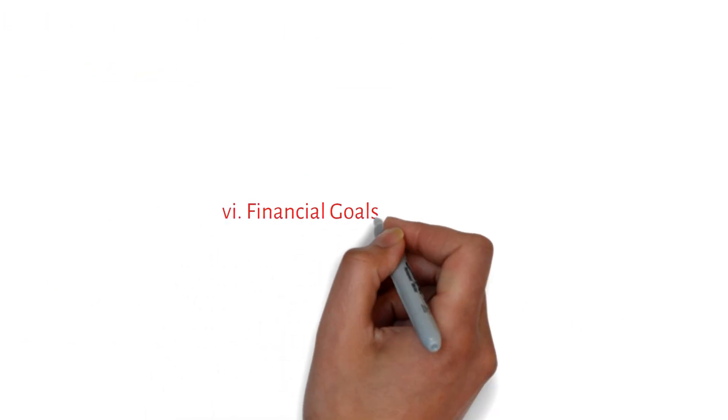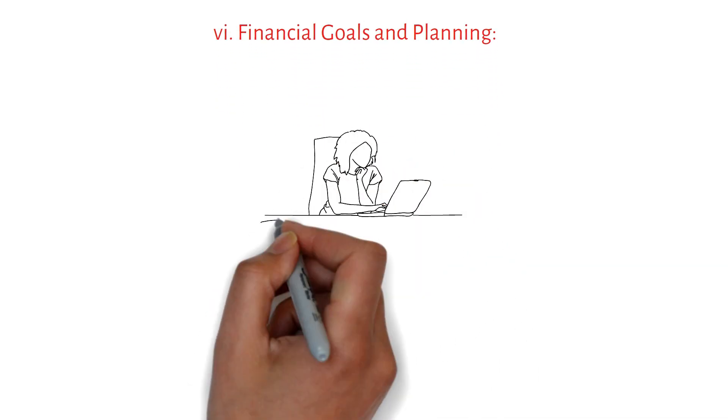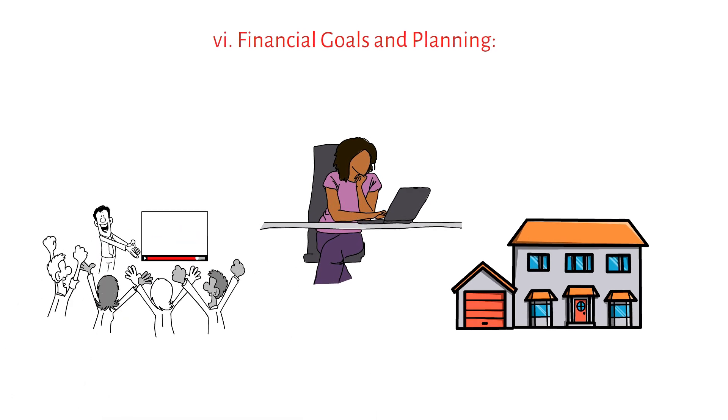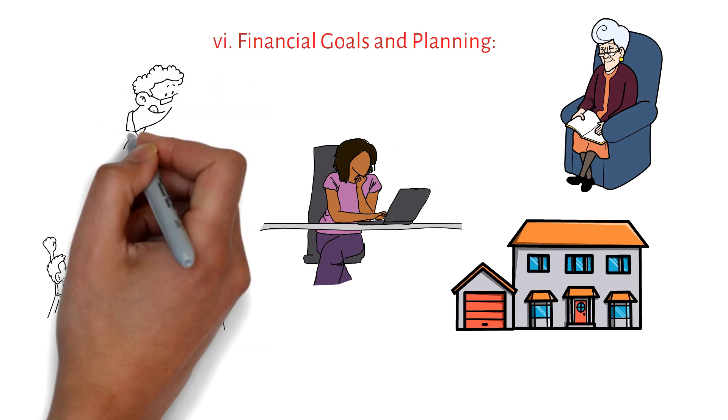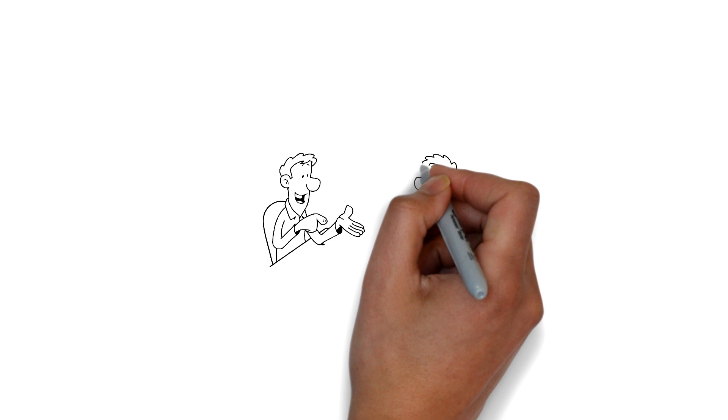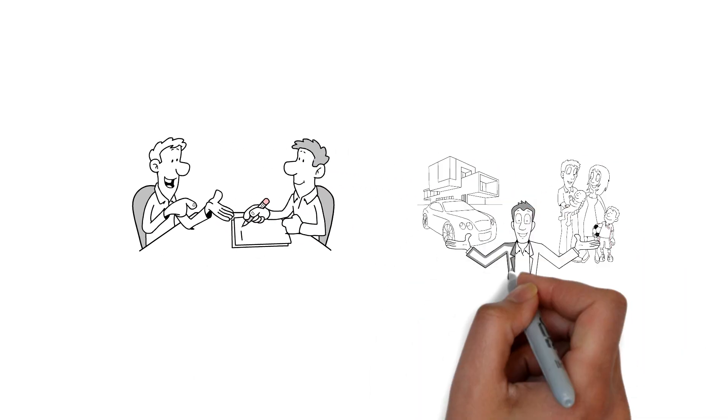Financial goals and planning. Reflect on your short-term and long-term financial goals. Are you saving for a down payment on a home, planning for education expenses, or preparing for retirement? Evaluate your progress towards these goals and adjust your strategies if needed. Consider consulting a financial advisor to help create a comprehensive financial plan that aligns with your objectives.